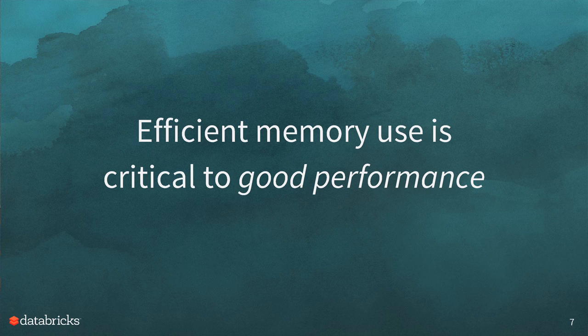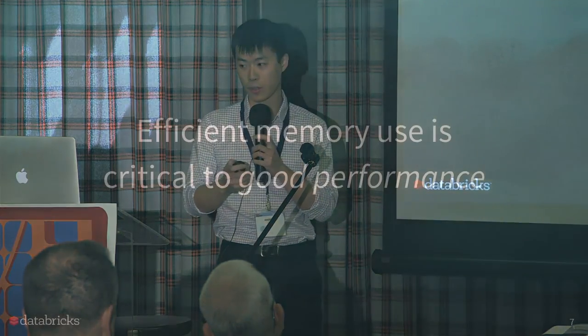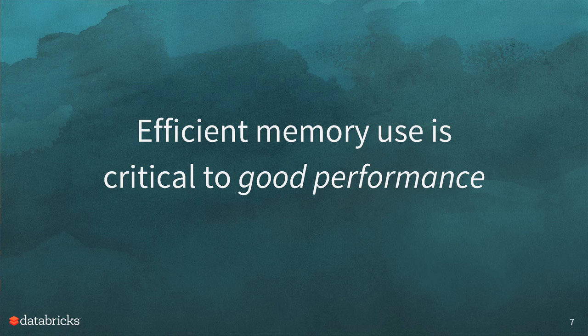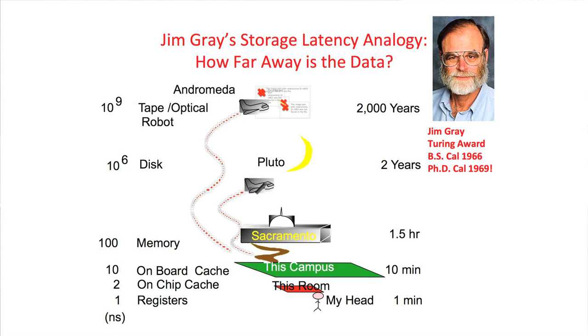The title of this talk is Deep Dive: Memory Management in Spark. You might be thinking, why do I care about all the internal details of a system I barely use? Well, it turns out that for any distributed computing system, memory is an extremely critical resource. I would go as far as to say that efficient memory use is critical to good performance — and everyone cares about good performance because that translates directly to business value. To illustrate this, I'd like to borrow from Jim Gray's famous analogy about storage latency.